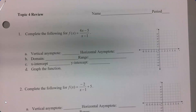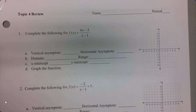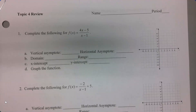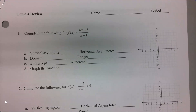On this one, I am going to go over the chapter 4 review. For this problem, I want to find my vertical asymptote, my horizontal asymptote, domain, range, x-intercept, y-intercept, and graph the function. So find all of these.